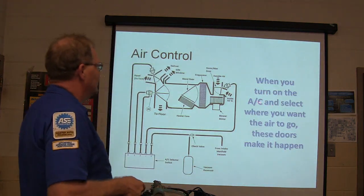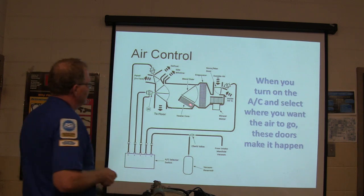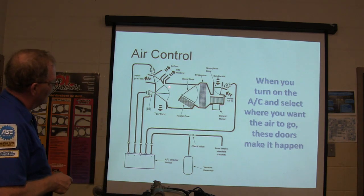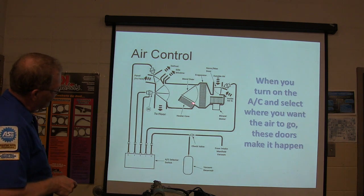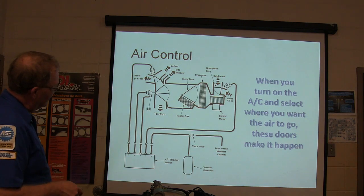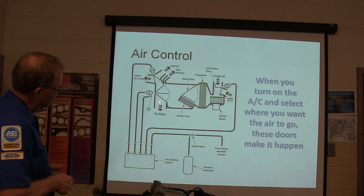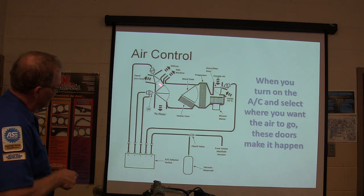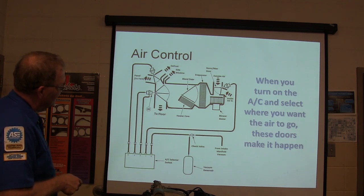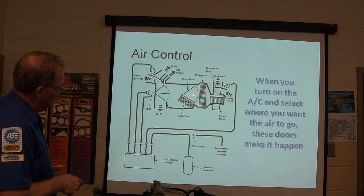When you turn on the AC and select where you want the air to go, the doors make it happen. The blend door bypasses the heater core — when it's closed, all the air goes straight through the evaporator and comes out cold. The mode door changes where the air goes. The blend door changes whether it's cold or warm. Even if everything else is working right, a bad blend door can make it blow hot air.